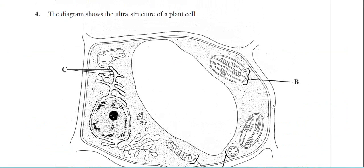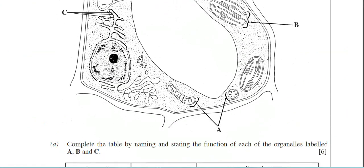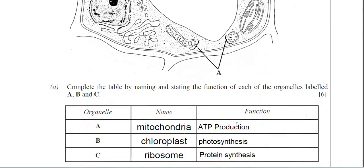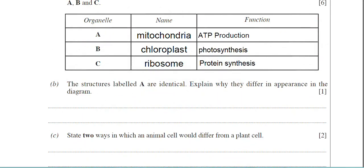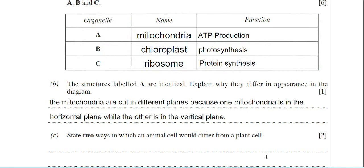Right, if we go back to question number four then. And hopefully now you can see that this shape of the organelle is spherical. And that's because it's lying in a vertical plane. And the other organelle now is an elongated one, which shows it's lying in a horizontal plane within the cell. So let's type that answer in for part B. There we go. So I've said the mitochondria are cut in different planes. That's quite an important term because one mitochondria is in the horizontal plane while the other is in the vertical plane.